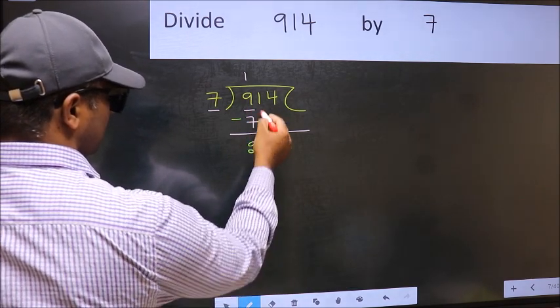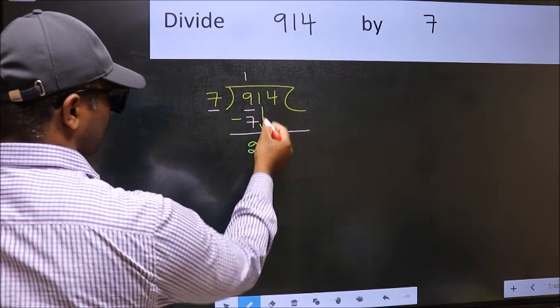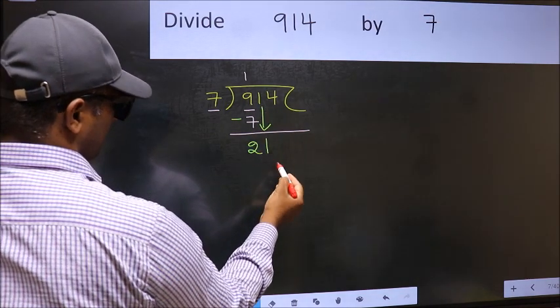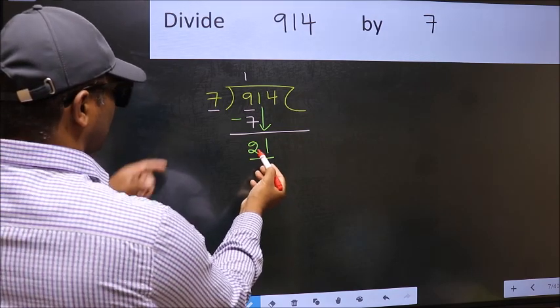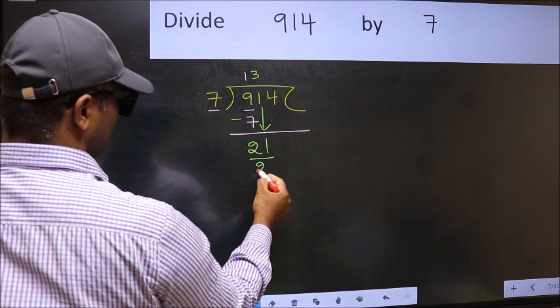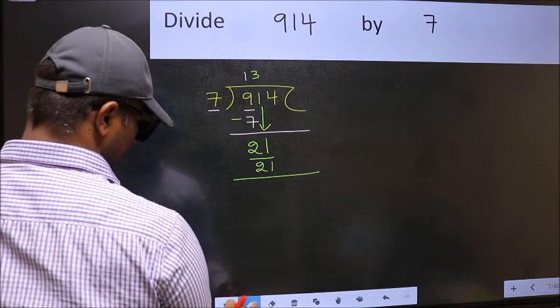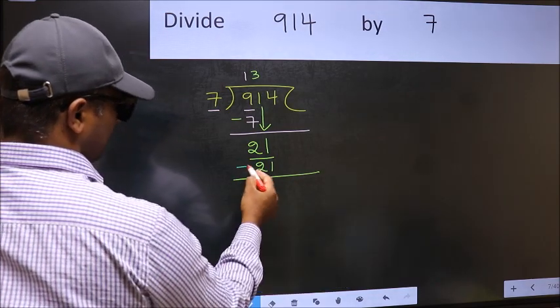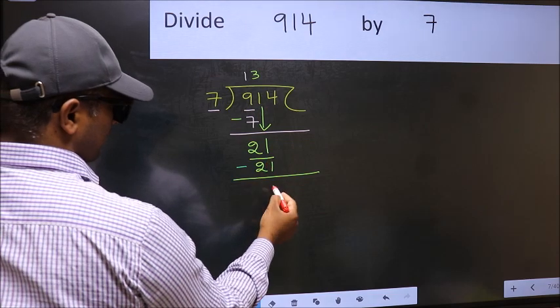After this, bring down the beside number. So 1 down. Now 21. When do we get 21 in 7 table? 7 threes, 21. Now you should subtract. 21 minus 21, 0.